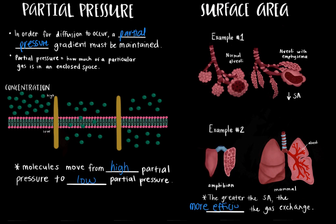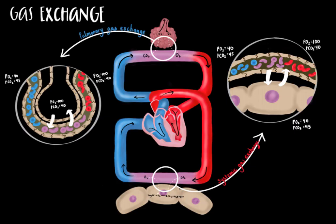Now that we have briefly discussed partial pressure gradients and the effect of respiratory surface area on gas exchange, we are ready to discuss pulmonary and systemic gas exchange. Pulmonary gas exchange occurs at the interface of the alveoli and capillaries in the lungs. Oxygen is being picked up by the deoxygenated red blood cells coming from the pulmonary arteries. Oxygen's partial pressure is higher in the alveoli — 100 mmHg — than in the pulmonary capillaries at 40 mmHg. As a result of this gradient, oxygen diffuses into the blood and binds to hemoglobin in red blood cells.